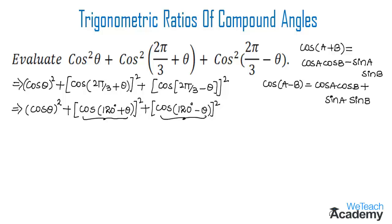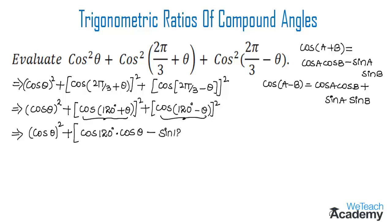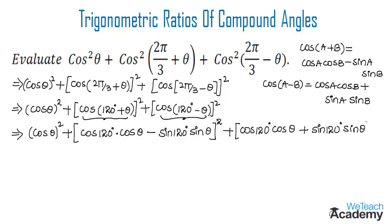Using both formulas we can expand cos(120° + θ) and cos(120° − θ). Expanding, we get cos²θ + [cos120° cosθ − sin120° sinθ]² + [cos120° cosθ + sin120° sinθ]².